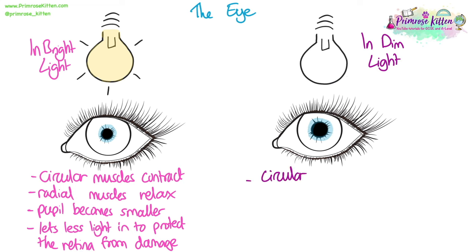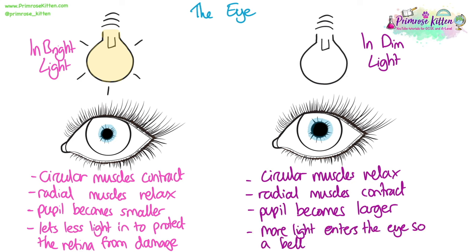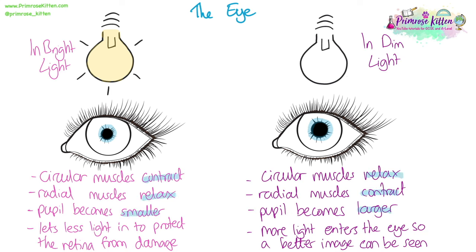In dim or low light, the opposite happens. The circular muscles relax, the radial muscles contract, and the pupil becomes larger — we say it is dilated. This is so that more light enters the eye so a better image can be seen, which is helpful in dim light to make sure that you can see as best you can and stay safe.